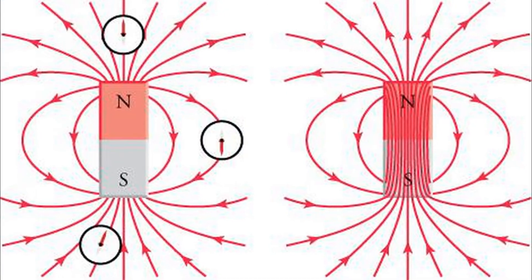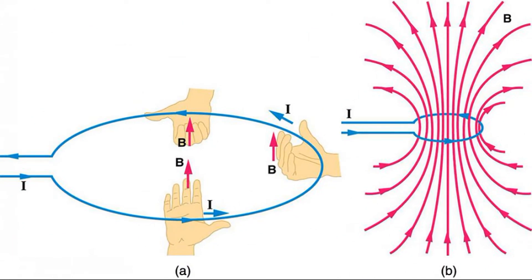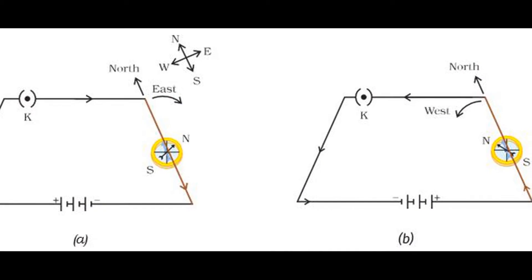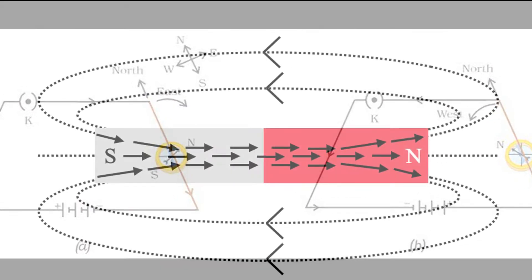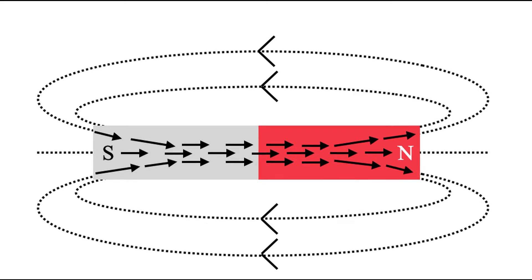Move the compass such that the end of the needle opposite to the arrow lies on the dot. Once again, mark the direction in which the arrow is pointing with a dot. Repeat the above procedure until the south pole is reached. The magnetic lines of force indicate the nature and extent of the force.